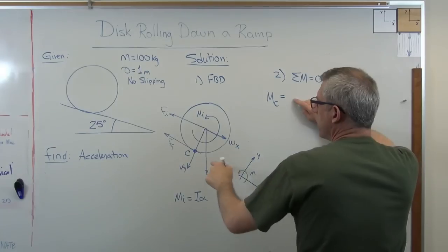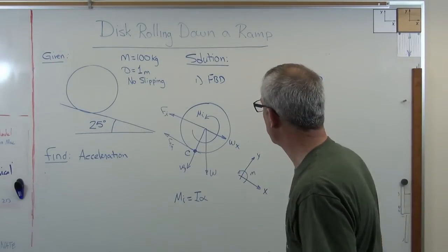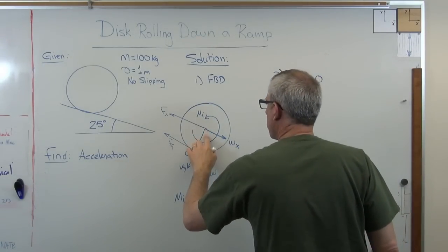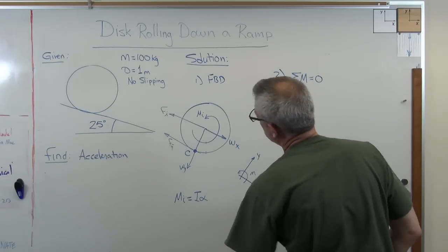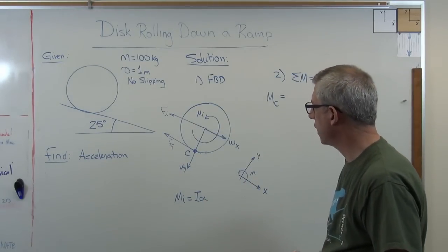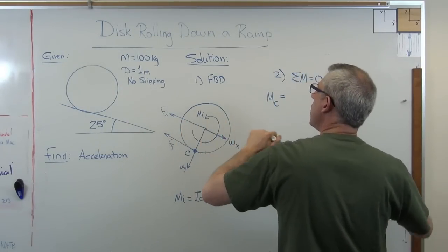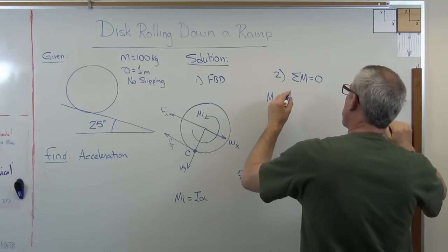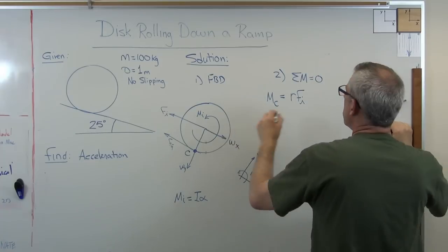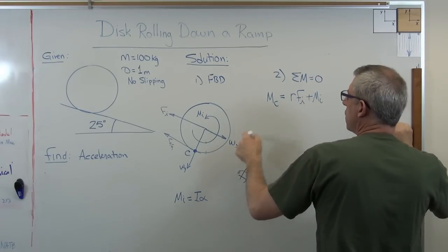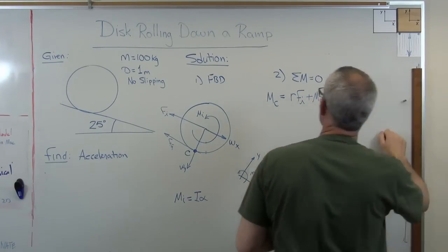So moments about C equal. Let's start working this out. There's W sub Y and F friction force don't have any moments because they go right through C. Now, because I've gotten this broken down into its components, I really don't need W anymore. So the friction of the inertial force multiplied by the radius is going to give me a counterclockwise moment, positive moment. So I can say R F sub I plus M sub I minus one more thing here, minus R W X. And all that has to equal zero.